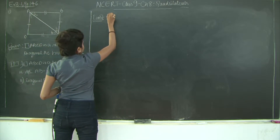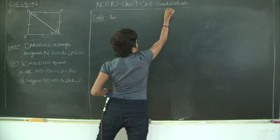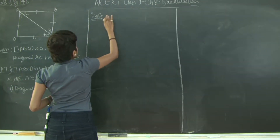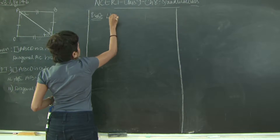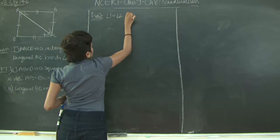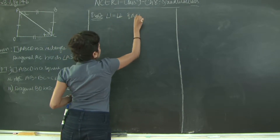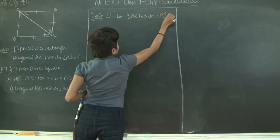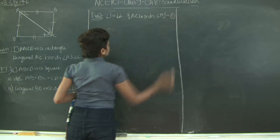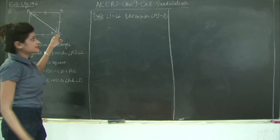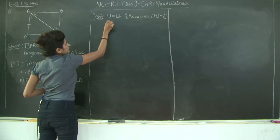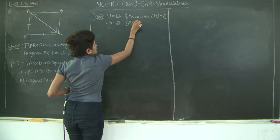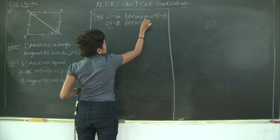Now for the proof. Angle 1 is equal to angle 2 because AC bisects angle A — this is given, let's mark this as statement 1. Similarly, angle 3 is equal to angle 4 because AC bisects angle C — also given.